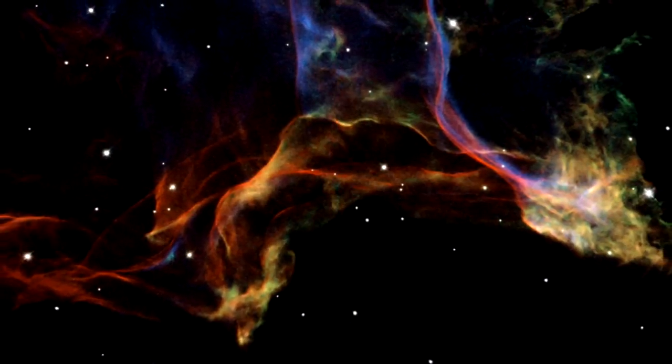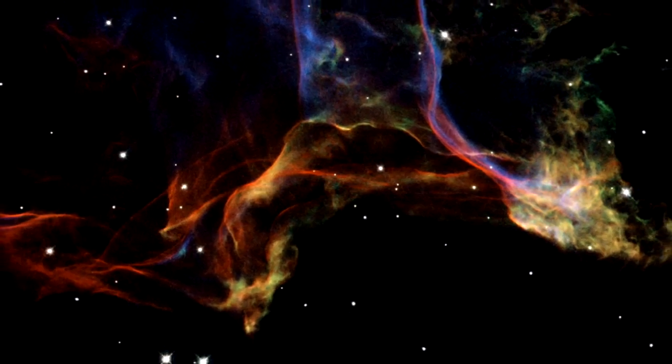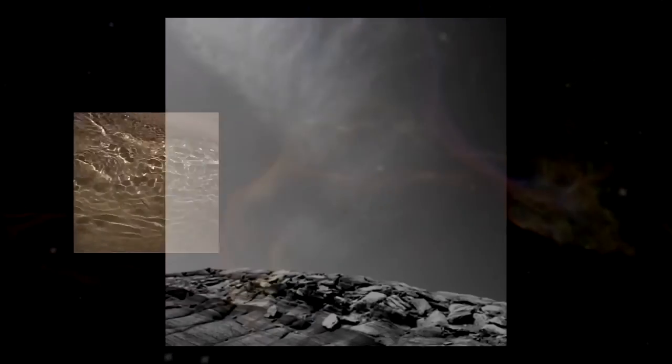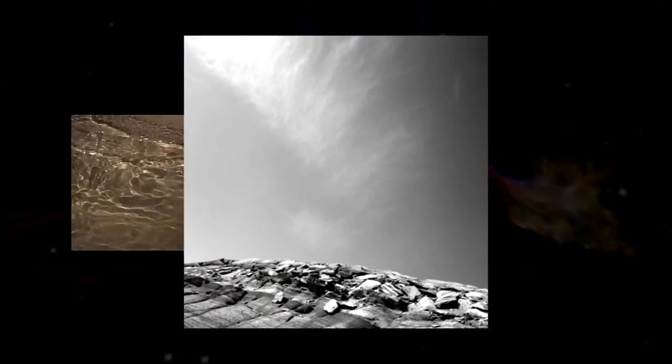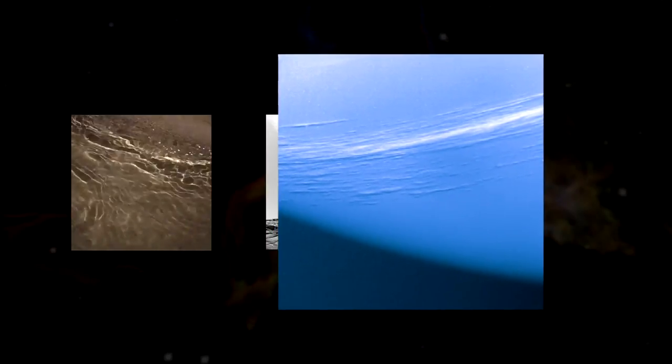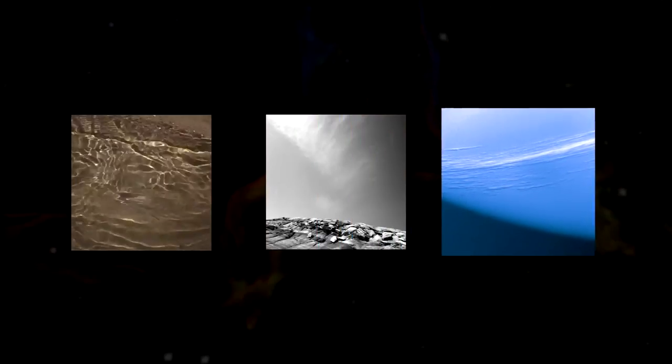The Hubble images of the Veil Nebula are striking examples of how processes that take place hundreds of light-years away can sometimes resemble effects we see around us in our daily lives. There are similarities with the patterns formed by the interplay of light and shadow on the bottom of a swimming pool, rising smoke or wispy cirrus clouds.